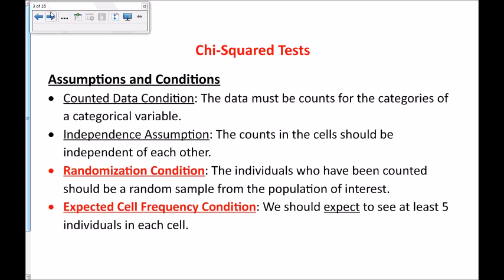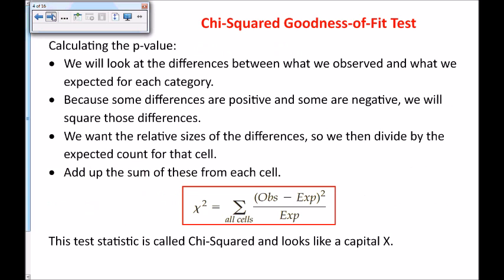The second condition you must check is the expected cell frequency condition: we should expect to see at least five individuals or five subjects in each cell. You must check both of those. When we calculate the p-value, we look at the differences between the observed values and what we expected for each category.